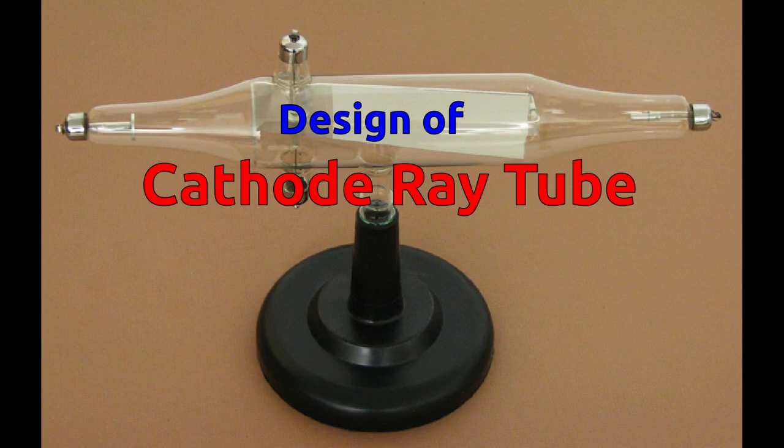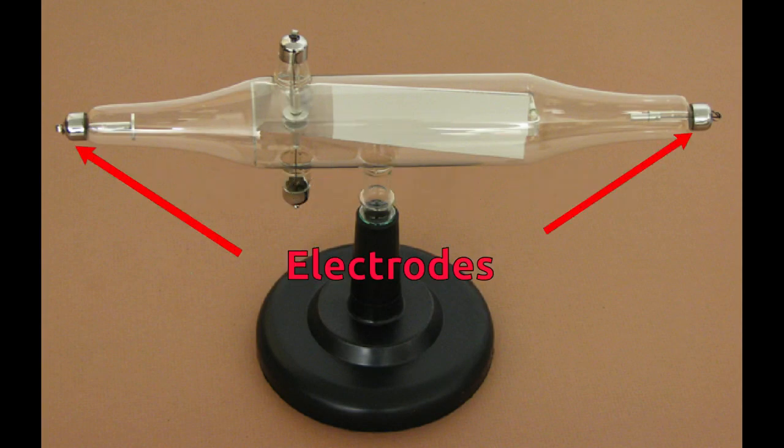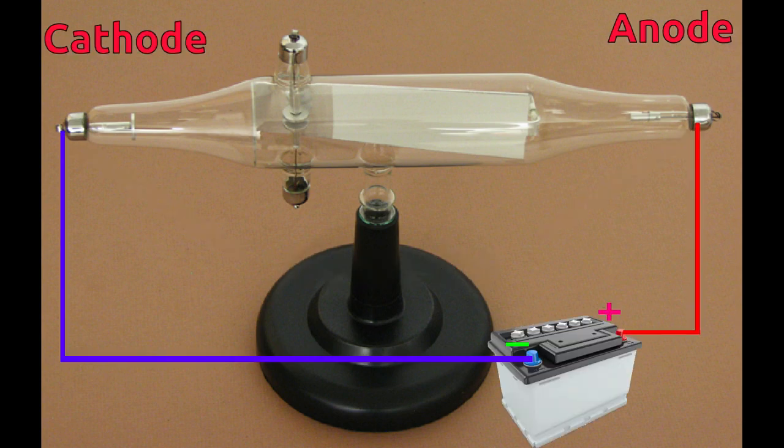Design of modern cathode ray tube. Cathode ray tube has two metal electrodes. Electrodes are the places where power source is connected. Positive terminal of power source is connected at anode and the negative terminal of power source is connected at cathode.